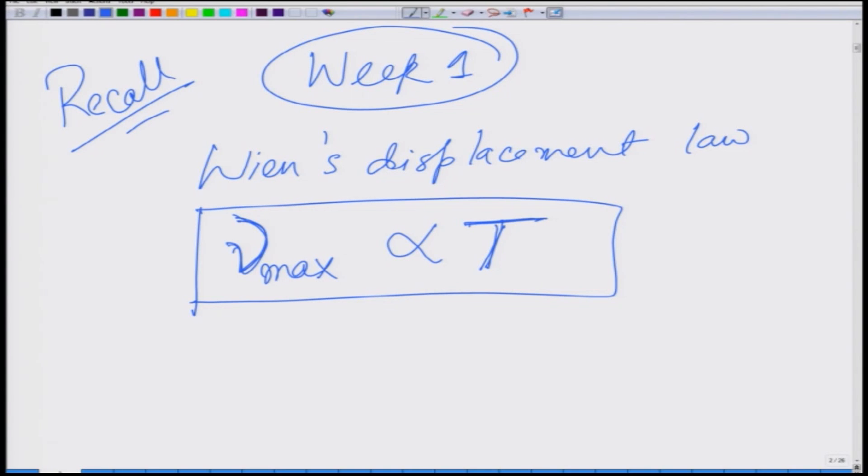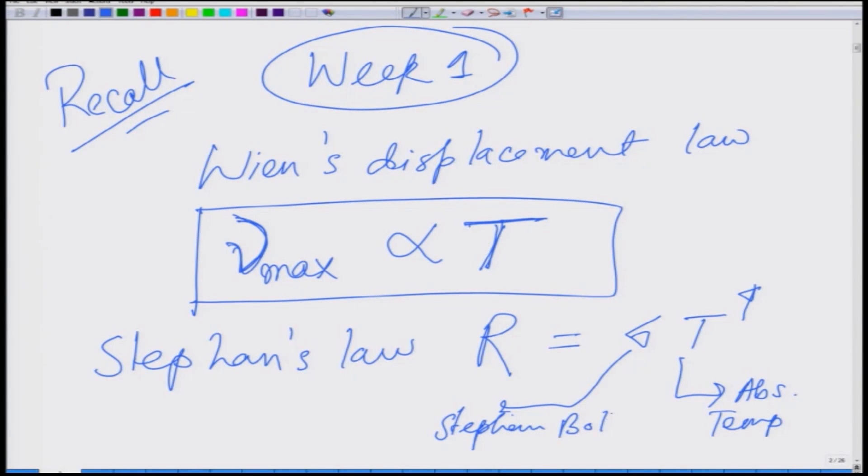We have also learnt from Stefan's law that the radiancy is sigma T to the power 4 where T is the absolute temperature, sigma is the Stefan-Boltzmann constant, and R is the radiancy or the energy emitted per unit area per unit time.